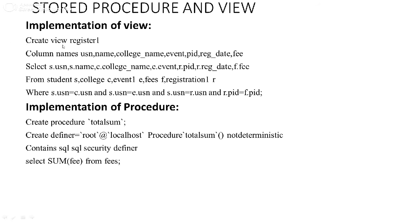To create the view, we use CREATE VIEW followed by the view name, and inside that we write the SELECT statement. We need USN, name, college name, event, PID, registration date, and fee. USN and name are collected from the student table, college name from the college table, event from the event table, PID and registration date from the registration table, and fee from the fees table. After this we join all these tables.